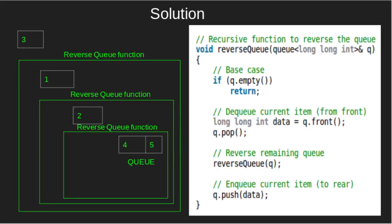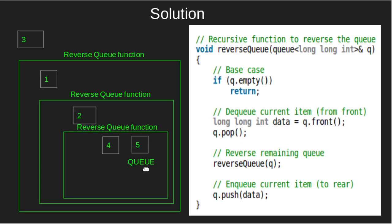Thus, in the reverse queue function, we check if the queue is empty or not. Here, the queue is not empty. Thus, we'll store the front element in data and dequeue the queue, i.e. pop 4. Now, we'll call the reverse queue function for the remaining queue.